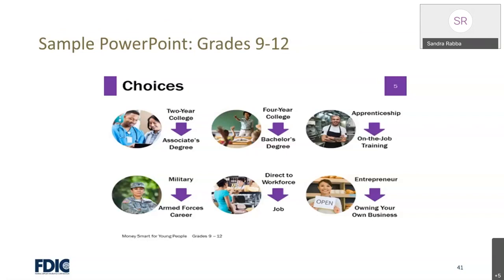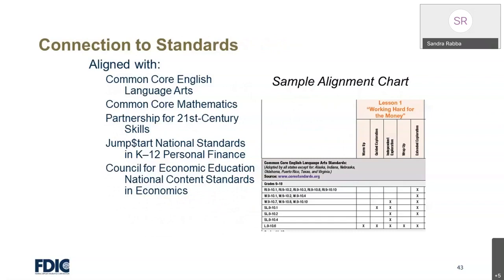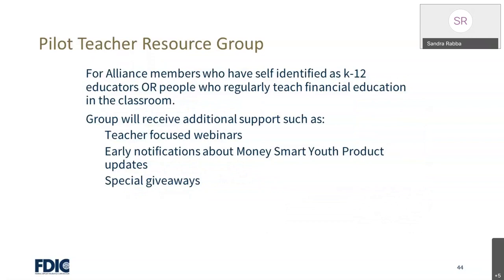This is a sample PowerPoint for grades 9-12. There's also a sample handout of grades 3-5 that includes a short-term goal, a long-term goal, directions, and a situation where students can answer questions afterwards. Each level of the curriculum is linked to several key educational standards: the National Jumpstart Coalition Financial Literacy Standards, Common Core Standards for English Language Arts and Mathematics, National Standards of Economics, and Partnership for the 21st Century Skills. There is a table in the back of each level that shows direct connections to specific standards.